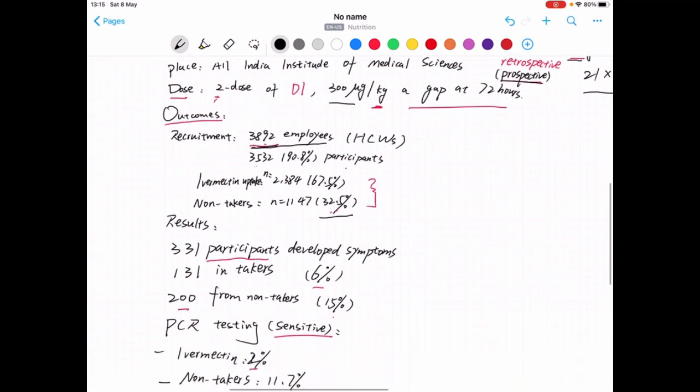And as a result, 331 participants developed symptoms of COVID. And then, let's see what is the percentage in those two group interventions and comparative groups.